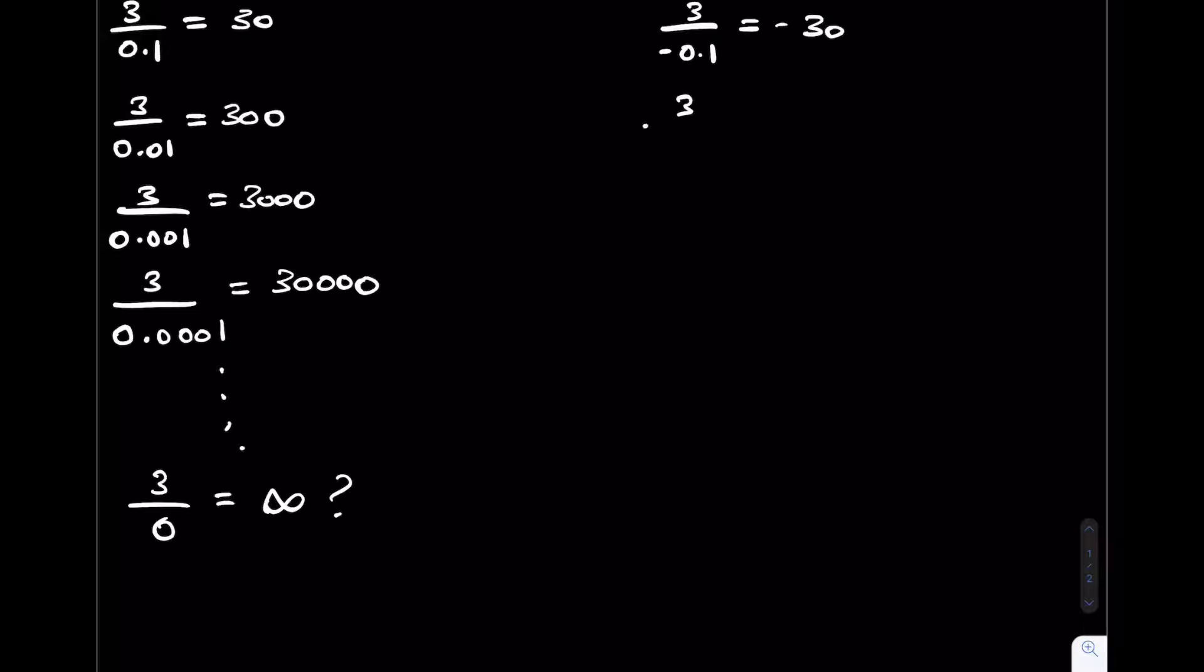So I can take 3 and divide it by minus 0.01. This will give me minus 300. 3 divided by minus 0.001 gives me minus 3000. 3 divided by minus 0.0001 gives me minus 30,000.